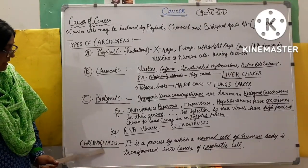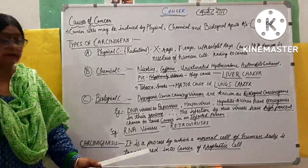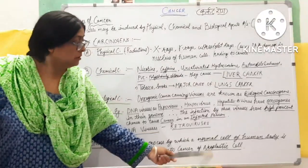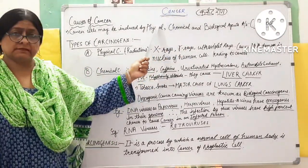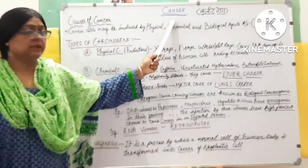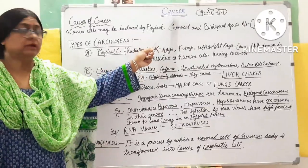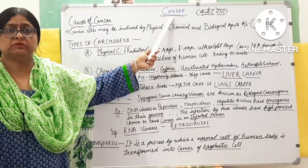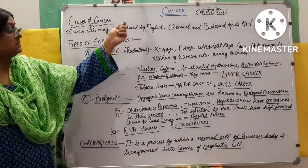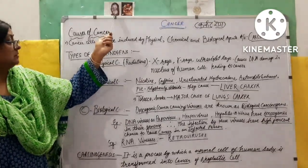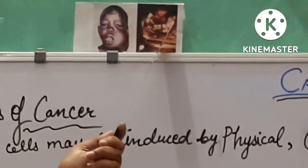Now we come to the term carcinogenesis. It is a process by which a normal cell of the human body is transformed into a cancerous cell, also known as a neoplastic cell. Cancer is a non-infectious disease — it is not caused by any pathogen such as a virus or bacteria. Here I am showing a picture of mouth cancer, with two diagrams showing the severe condition of fourth-stage cancer in the mouth.